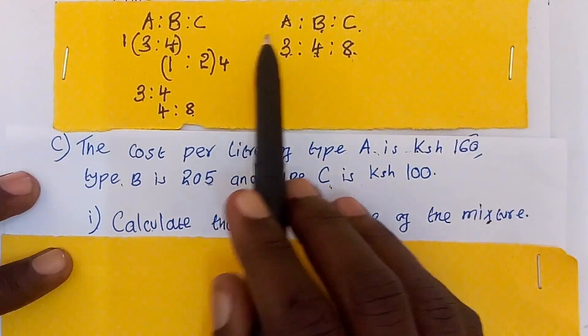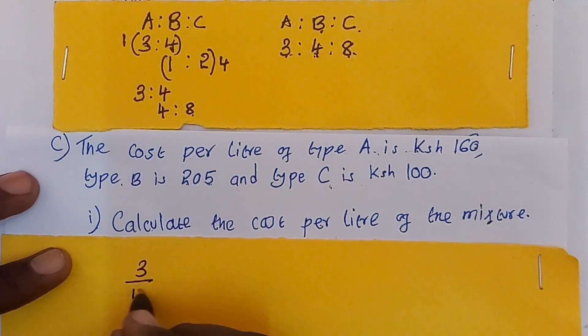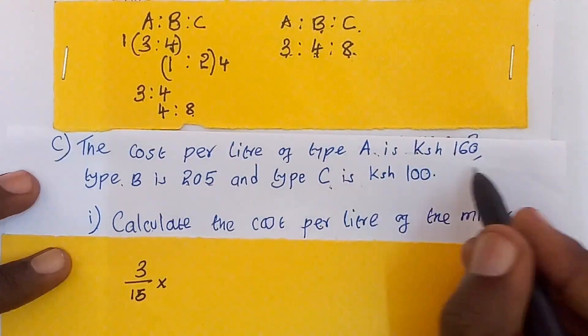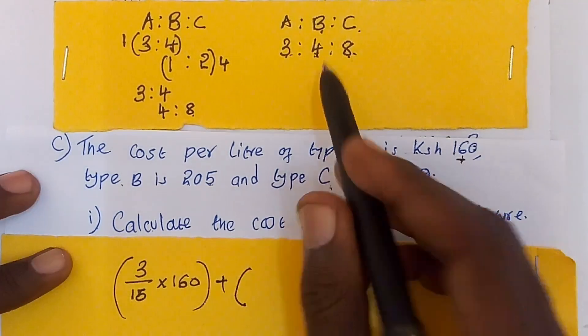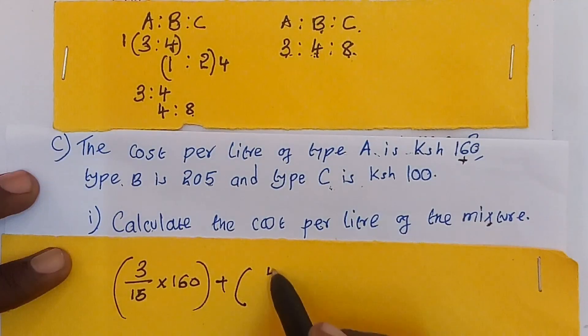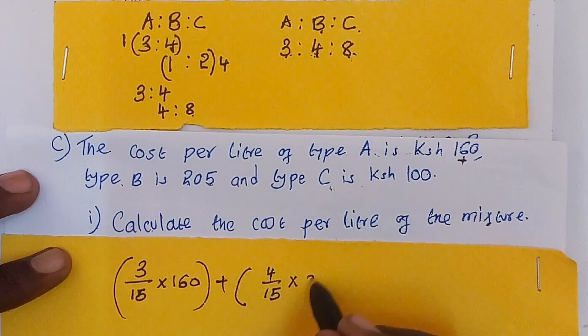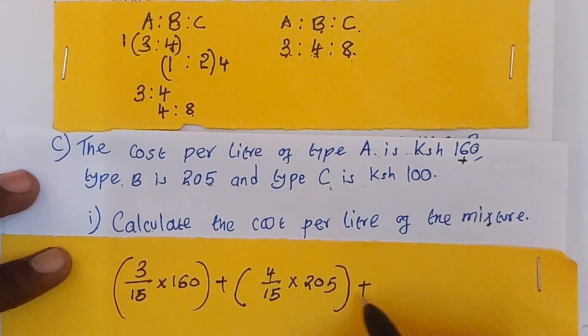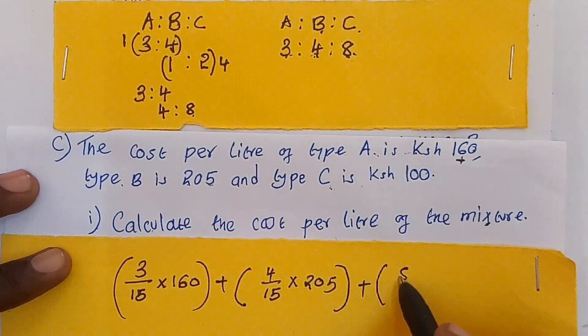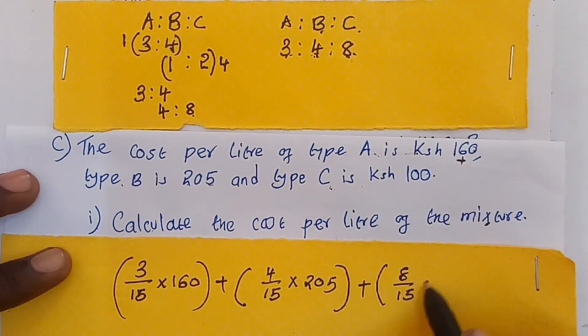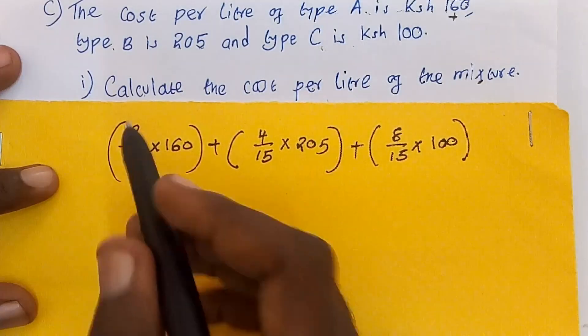We're going to say, for example, the ratio of A is 3 out of 15, multiply by 160, plus the ratio of B, which is 4 out of 15, times the cost which is 205, plus the ratio of C, which is 8 out of 15, times the cost which is 100.